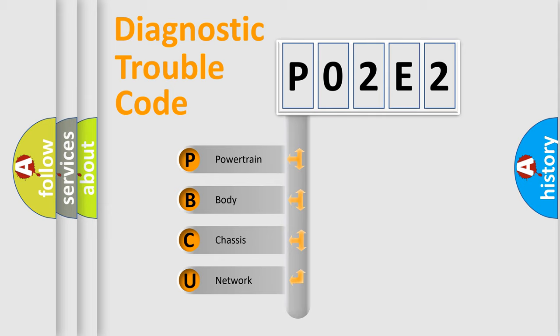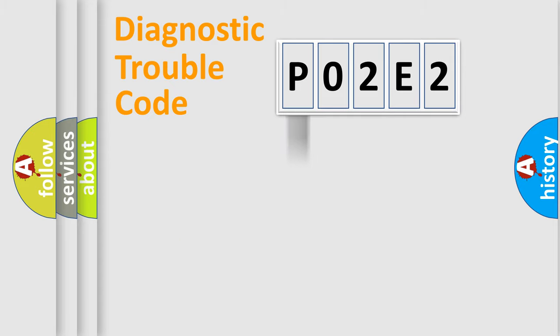We divide the electric system of automobile into the four basic units: Powertrain, Body, Chassis, and Network.